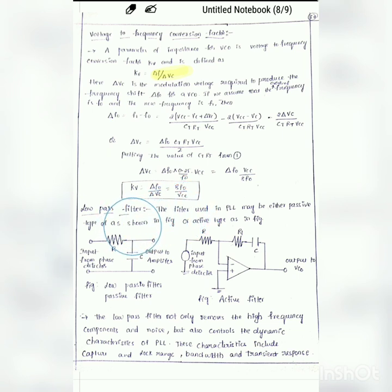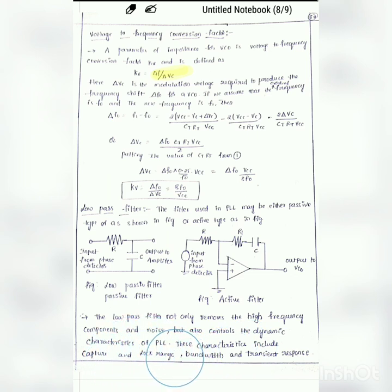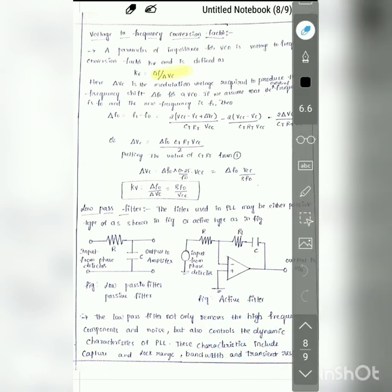The next block in the PLL is the low pass filter. The low pass filter blocks high frequencies and allows low frequencies to pass. It can be constructed using passive components such as R and C, or using active components like operational amplifiers. The low pass filter not only removes high frequency components and noise, but also controls the dynamic characteristics of the PLL, such as capture range, lock range, bandwidth, and transient response.